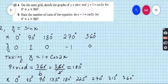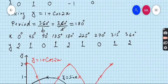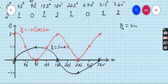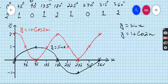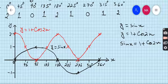Part B: state the number of roots of the equation sin x = 1 + cos 2x for the domain 0 to 360 degrees. The first equation is y = sin x and the second equation is y = 1 + cos 2x. Comparing both equations gives sin x = 1 + cos 2x. Graphically, this means the points where both curves intersect each other.